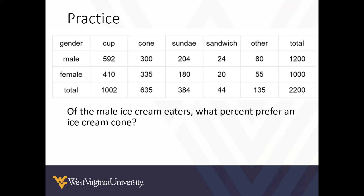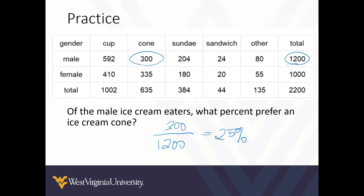Another example: of the male ice cream eaters — condition — what percent prefer an ice cream cone? Male and cone: 300 divided by 1,200 gives us 25%. So of male ice cream eaters, 25% prefer to eat an ice cream cone.